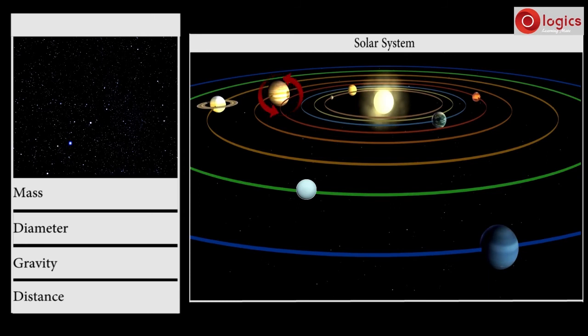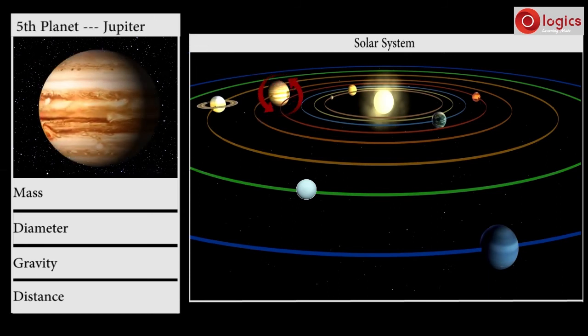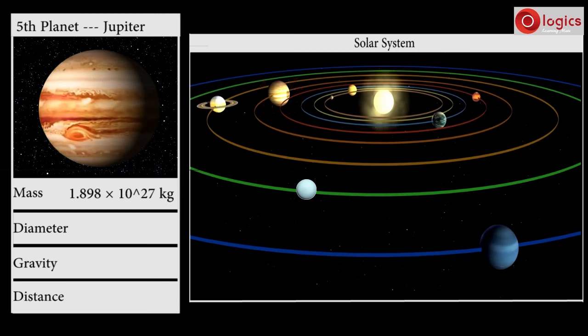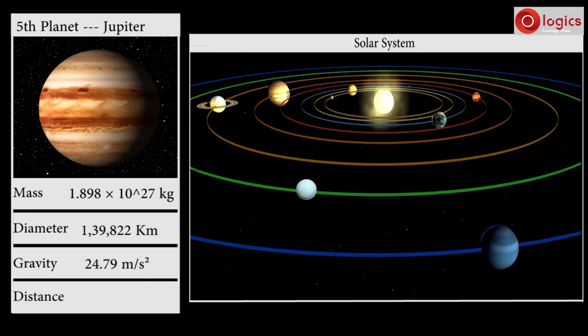The fifth planet in our solar system is Jupiter. Its mass is 1.898 × 10^27 kilograms. Its diameter is 139,822 kilometers. Gravity on Jupiter is 24.79 meters per second squared. Jupiter is 778.5 million kilometers distance from the Sun.